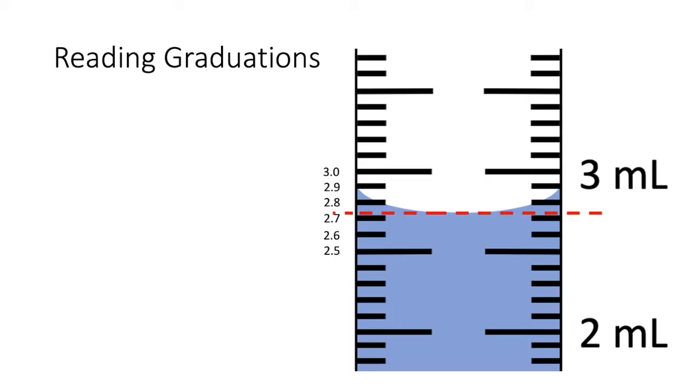So with that information, you can say that the bottom of the meniscus is somewhere in between 2.7 and 2.8.